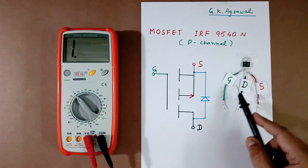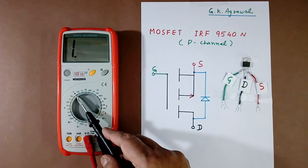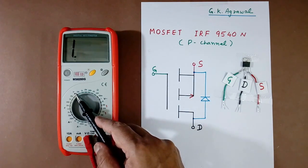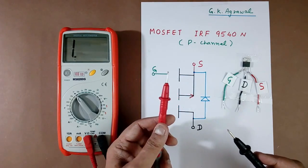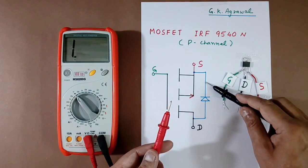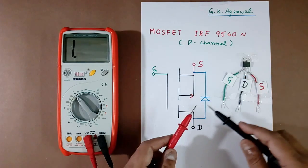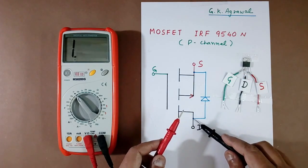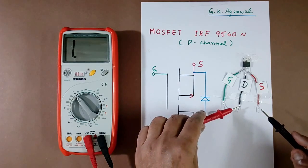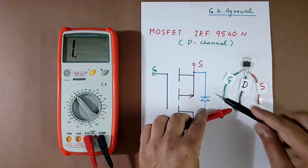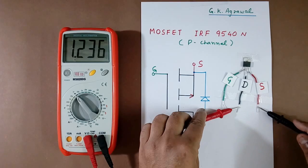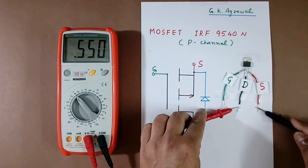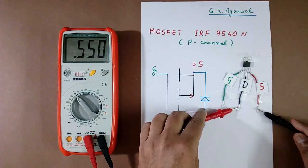Now first we will check this diode. I have kept my multimeter at diode. Now at this anode I will touch plus terminal, and at cathode I will touch minus terminal. So this plus terminal is drain, drain is this black color, so I will touch here. Similarly, cathode is this S, this is cathode, so I will touch here. See, diode drop is coming 0.55V. This means the diode is OK.